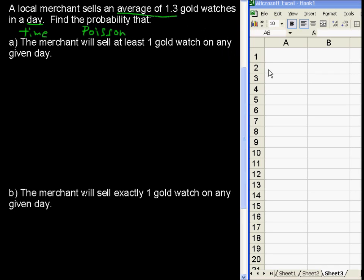Excel can handle that. It has an Excel function for the Poisson distribution. But first we have to understand what's being asked here. At least one gold watch means we're asking for the probability that x is greater than or equal to 1.